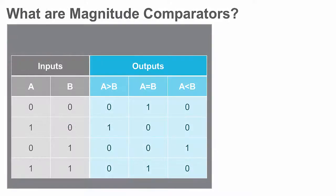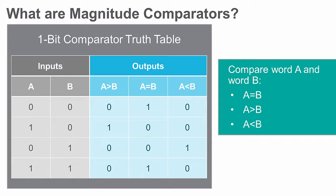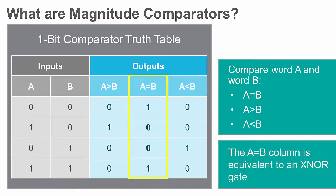Magnitude comparators are used to determine if word or input A is greater than, equal to, or less than word or input B. The truth table for a 1-bit comparator shows that the output of the A equals B row is the same as that of an exclusive NOR gate.